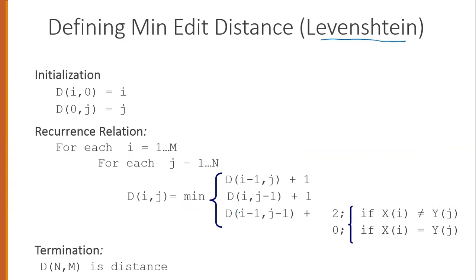Levenshtein distance means that when we substitute a character, the cost will be 2.